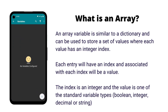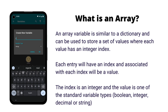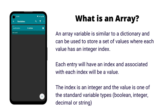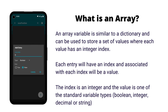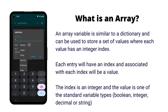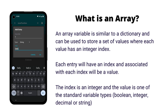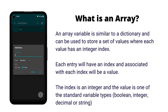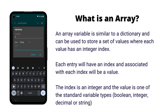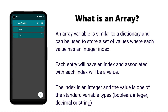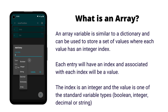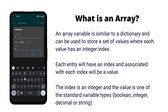An array variable is similar to a dictionary except instead of using a string-based key, an array uses an integer-based index with an associated value. As a simple example, we could store the position people came within a race using the position as an index and the person's name as the value. An array has the same advantages as a dictionary and can replace multiple individual variables that would otherwise be needed.